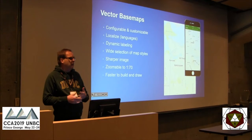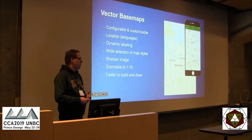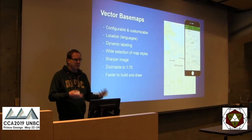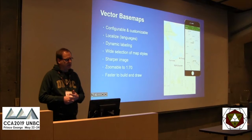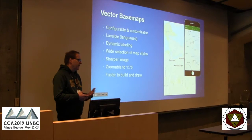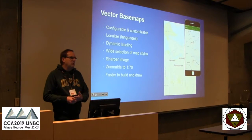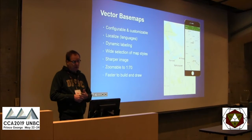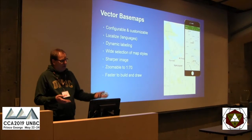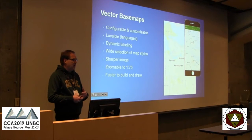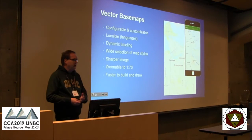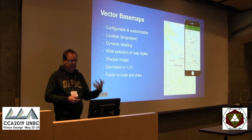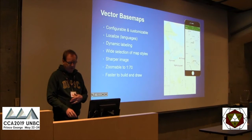You can localize vector base maps, so if you're looking to use a language other than English, you can set those parameters. They allow for dynamic labeling, so you can rotate the map and the labels will remain horizontal. They provide a wide selection of map styles, a sharper image, you can zoom down to very large scales, and they're much faster to build and draw.